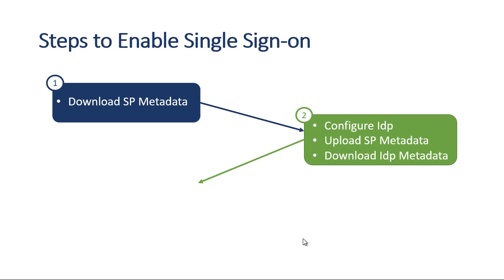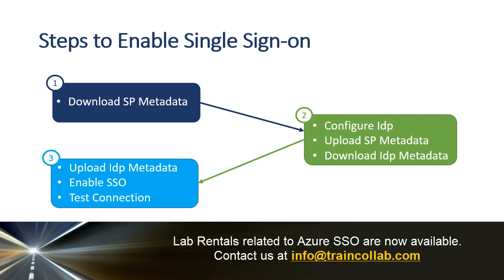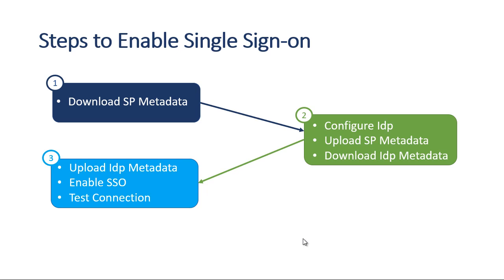Step two is to configure the identity provider — upload the service provider metadata and download the IDP metadata. That means you configure Azure, upload the CUCM metadata file on Azure, and then download the Azure metadata so you can upload it on your CUCM, Unity Connection, IM and Presence, and Expressway servers. Step three is uploading the identity provider metadata, enabling or activating the single sign-on feature on the UC side, and then testing the connection.